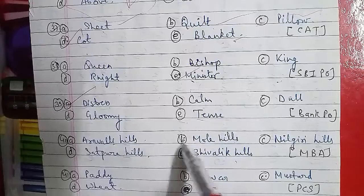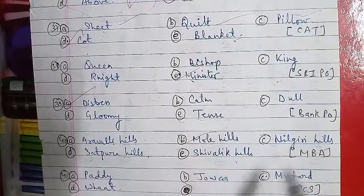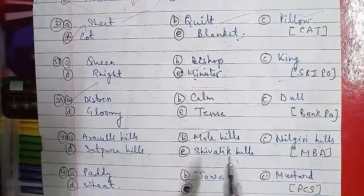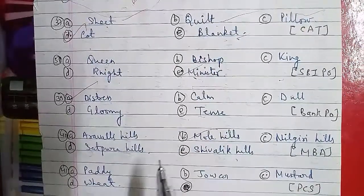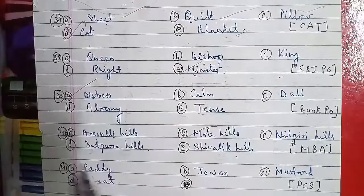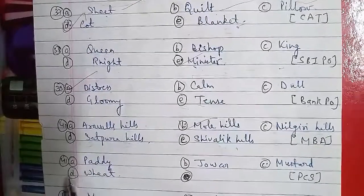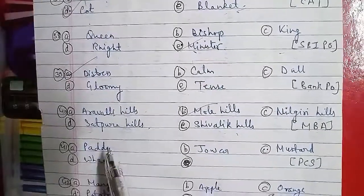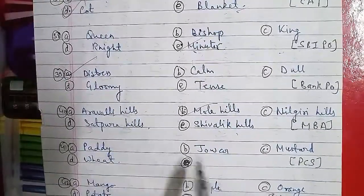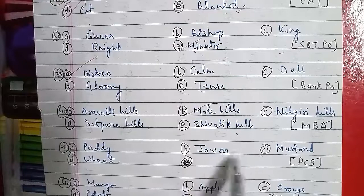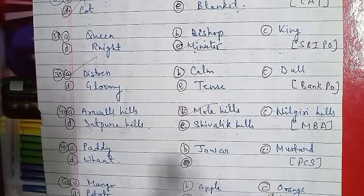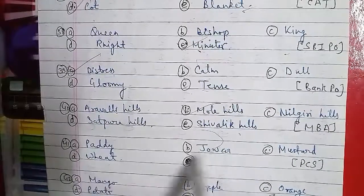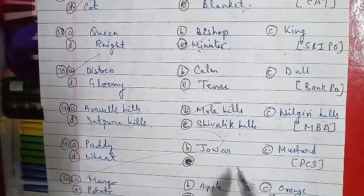Question number 41: Option A is Paddy, B is Jowar, C is Mustard, and D is Wheat. Paddy, Jowar, and Wheat come under the same category of cereal crops. Mustard is an oilseed crop, so it is different. The answer is Mustard. This was asked in the PCS question paper.